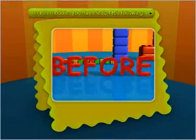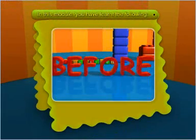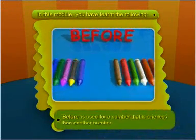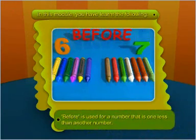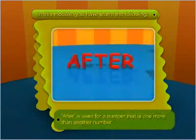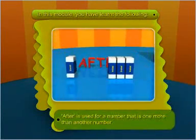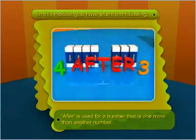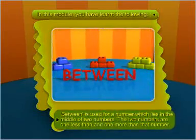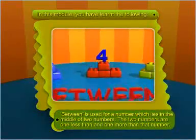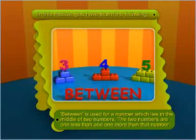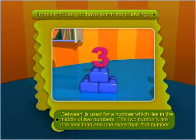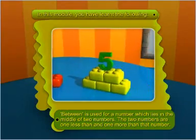In this module you have learned the following. Before is used for a number that is one less than another number. After is used for a number that is one more than another number. Between is used for a number which lies in the middle of two numbers. The two numbers are one less than and one more than that number.